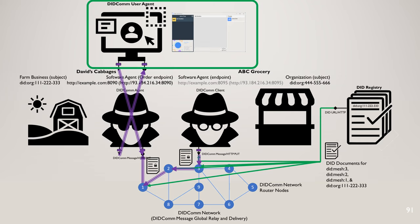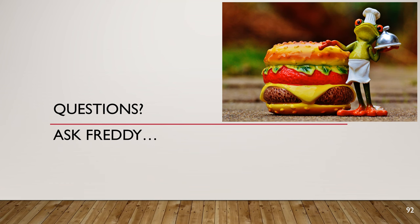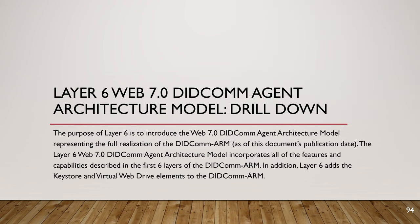Layer six — the culmination of Web 7.0. The DIDCOM user agent exposes a user interface and experience — this is how humans interact with the DIDCOM network. The last layer is the combination of all layers zero through five — six layers total, like the six layers in a hamburger.